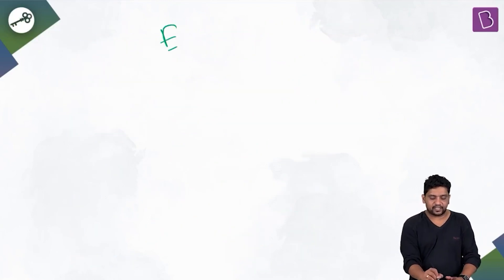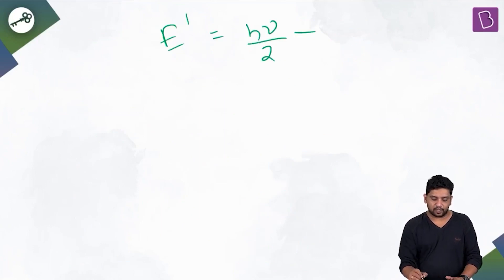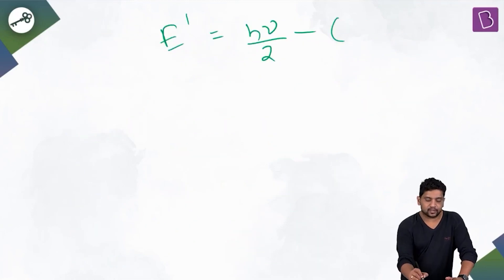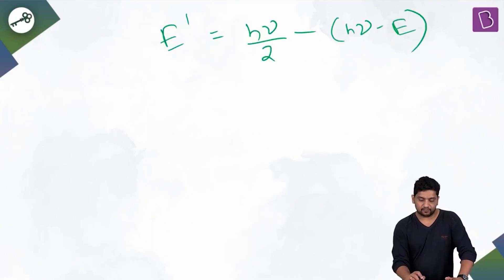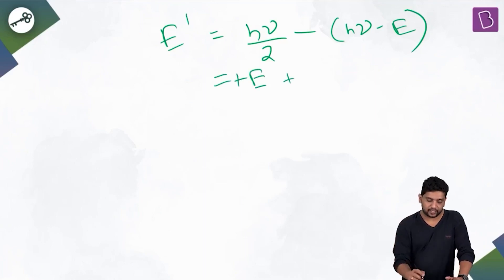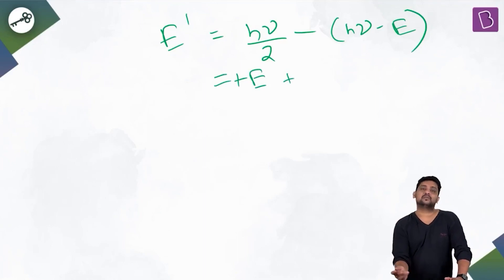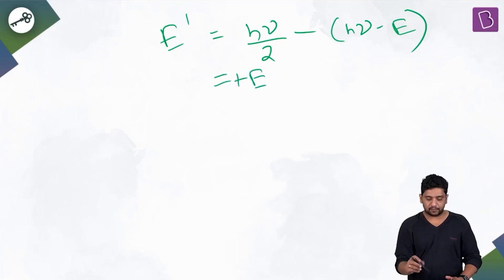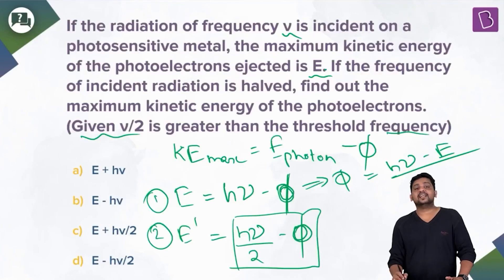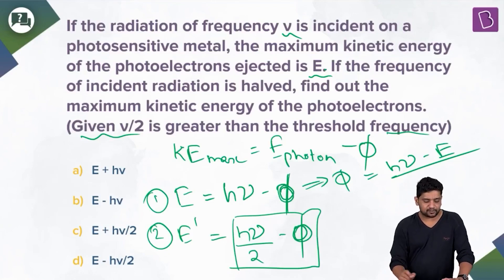Substituting: E′ = hν/2 − (hν − E) = hν/2 − hν + E = E − hν/2. So the maximum kinetic energy when frequency is reduced to half is E − hν/2. The correct answer is option D.